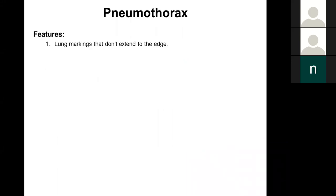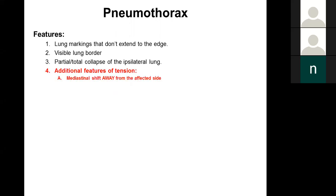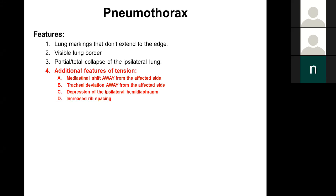Radiographic features of pneumothorax include absence of lung markings extending to the edge of the lung fields, a visible lung border within the thorax, and partial or total lung collapse. Additional features of tension to always look for include mediastinal shift away from the pneumothorax, tracheal deviation away, depression of the hemidiaphragm on that side, and increased rib spacing.